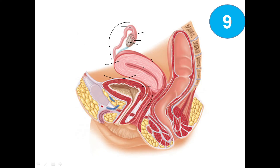Here we are having the vagina. Anterior to this part we are having the urinary bladder and urethra. Posteriorly — rectum and anal canal. We got here clitoris, labia majora, and labia minora.